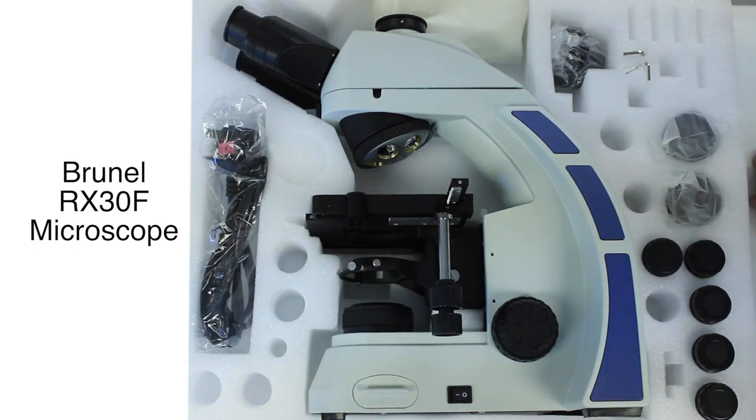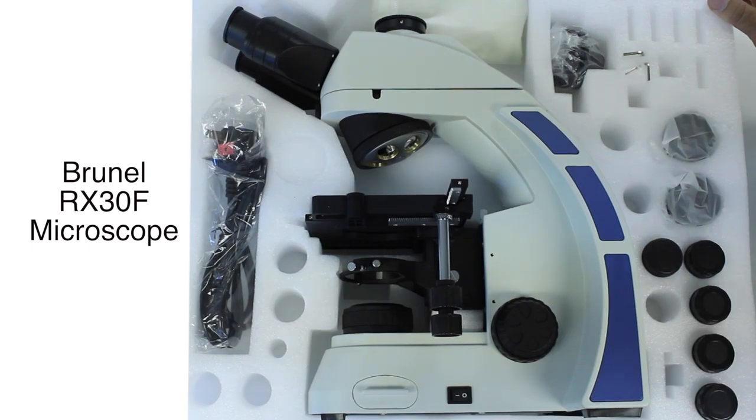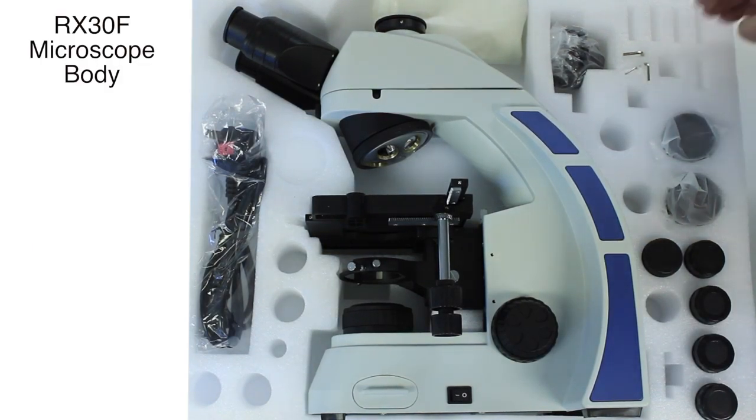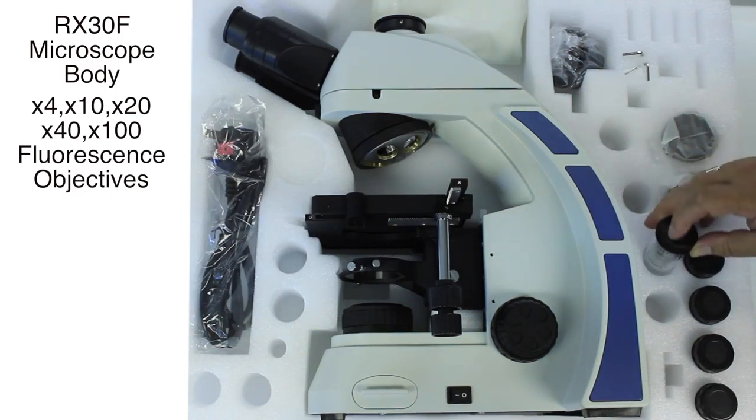The RX30F comes in two components. Here we have the main microscope body and here are the specialized fluorescence objectives.